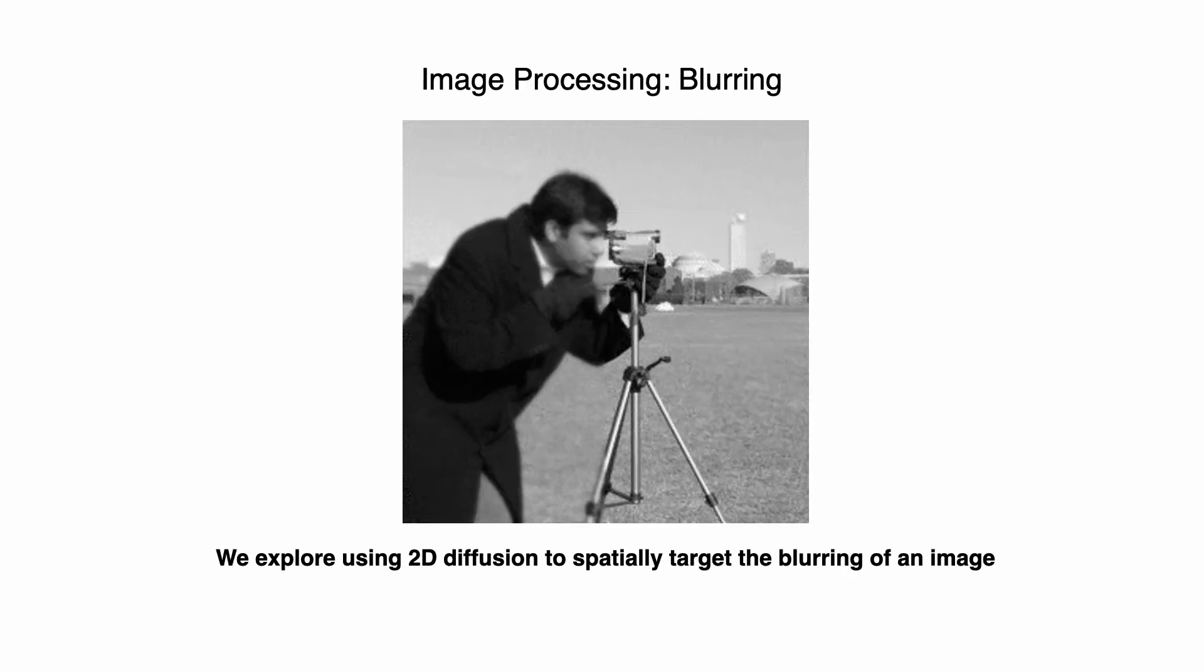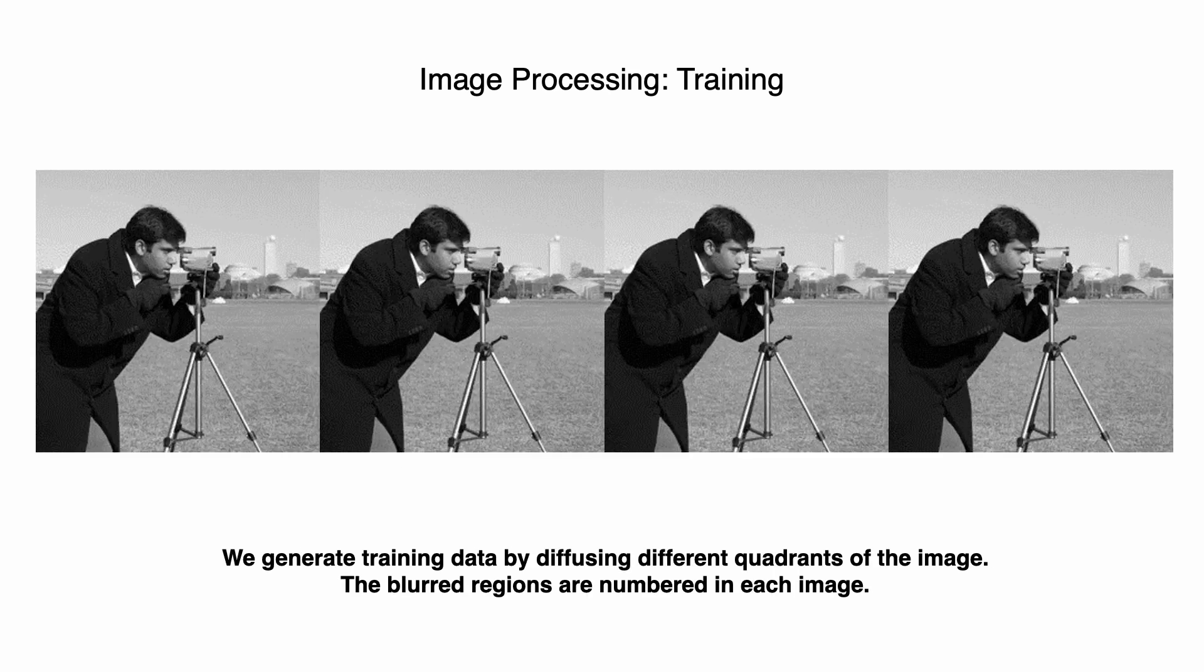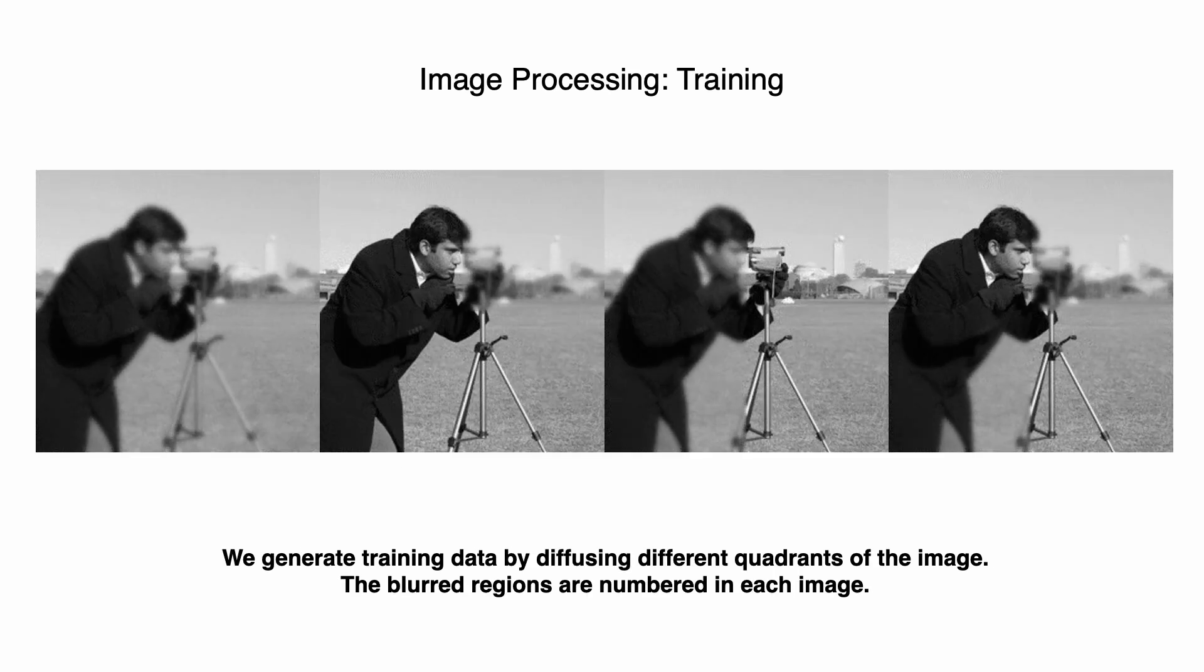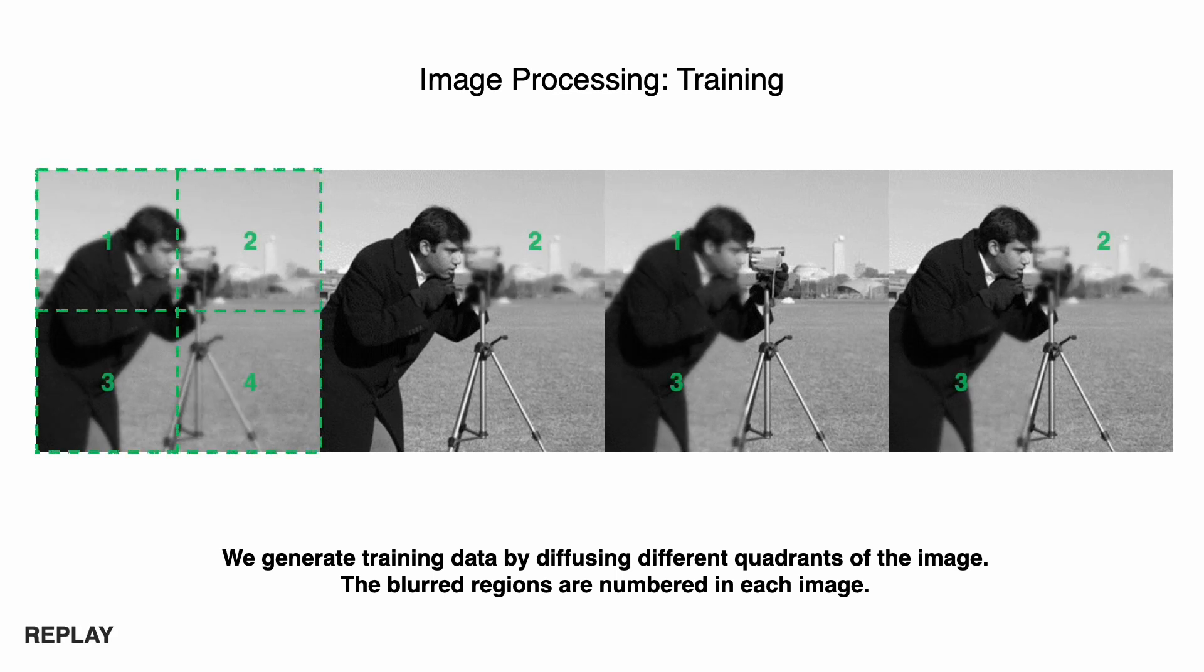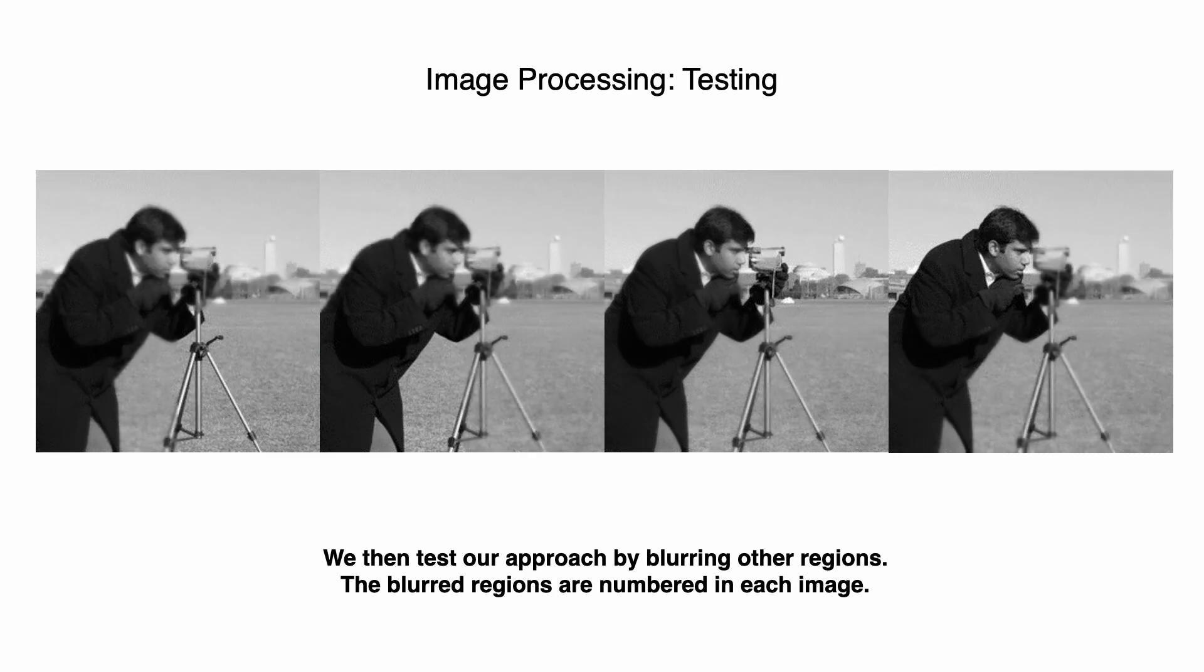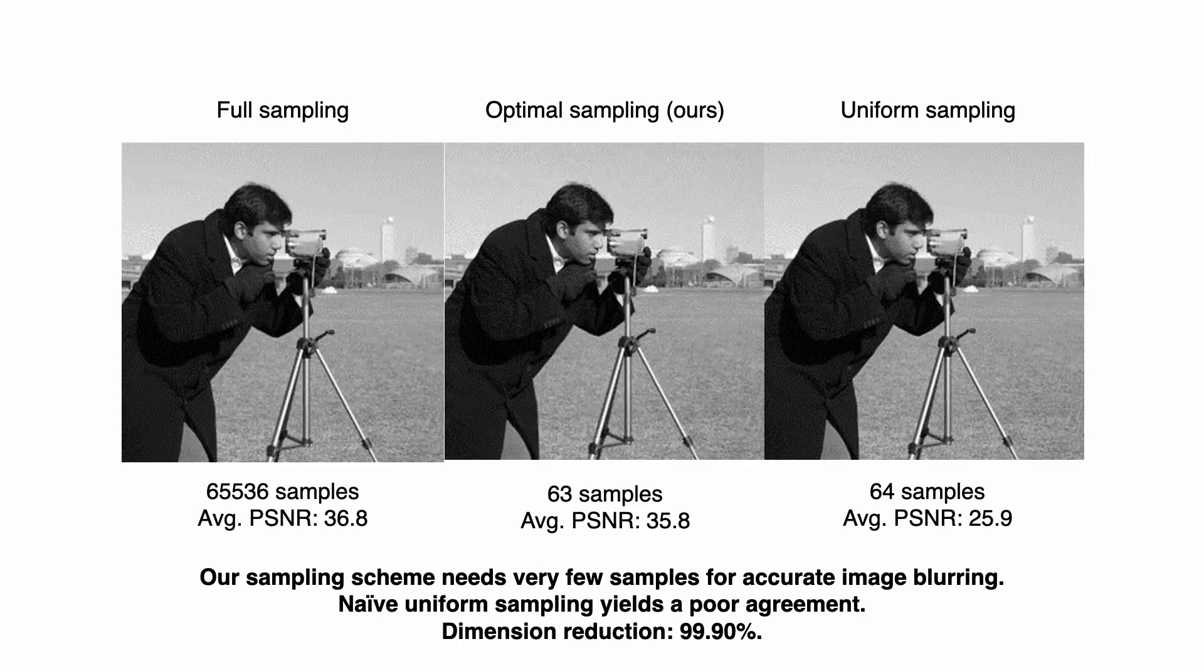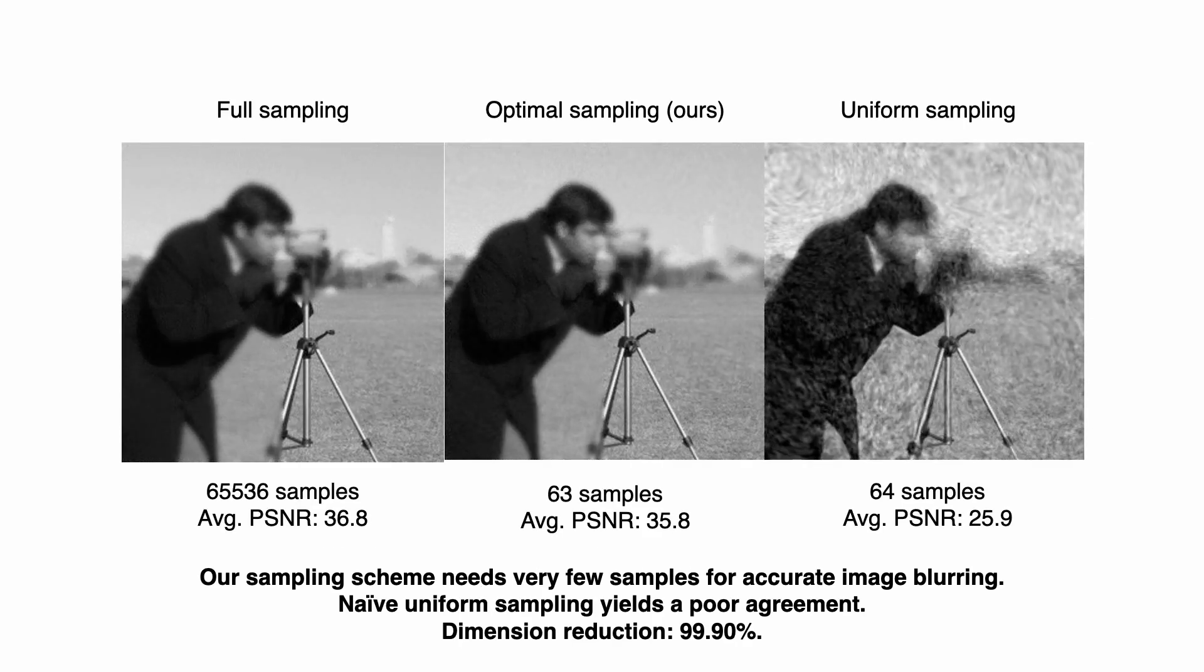To see how our approach extends to 2D, we explore spatially-targeted blurring of an image using the diffusion equation. Similar to 1D, for training we collect diffusion results on different quadrants of an image, and then we blur new combinations to test. We see that in higher dimensions, our sampling scheme allows us to reduce dimension by 99.9% while achieving high accuracy.